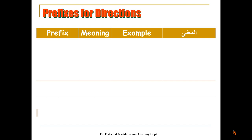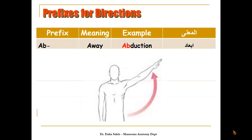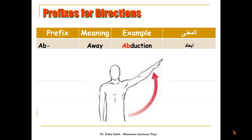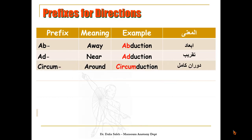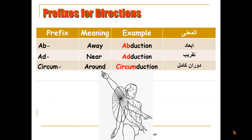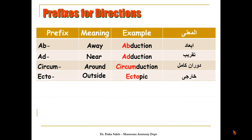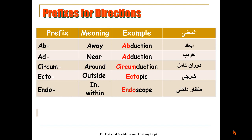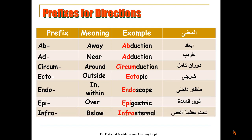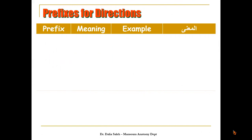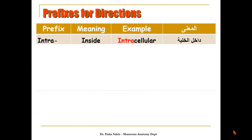Prefixes used for directions: 'Ab' means away, as in 'abduction'. 'Ad' means near, as in 'adduction'. 'Circum' means around, as in 'circumduction'. 'Ecto' means outside, as in 'ectopic'. 'Endo' means in or within, as in 'endoscope'. 'Epi' means over, as in 'epigastric'. 'Infra' means below, as in 'infrasternal'. 'Intra' means inside, as in 'intracellular'.